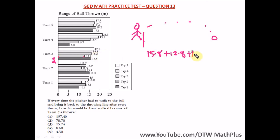Then he throws the third try which is 16.2, so we add 16.2. Then the fourth try is 16.8, so he walks, picks the ball, comes back to the line.